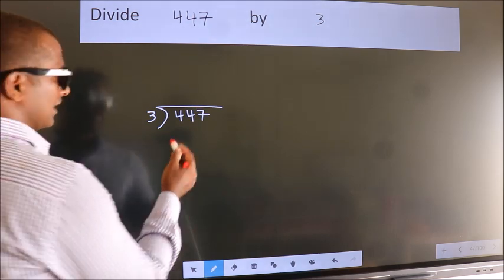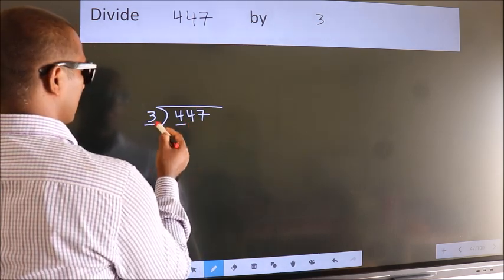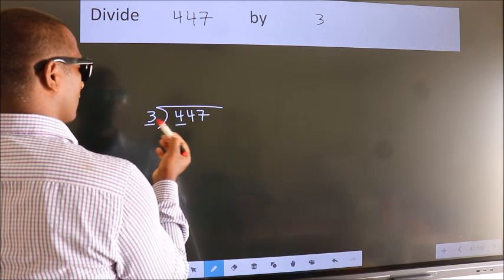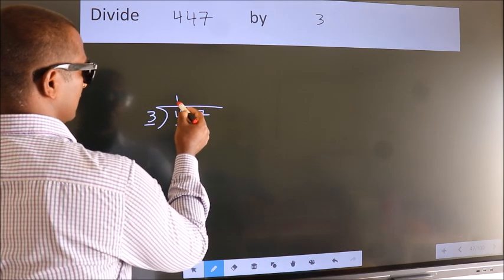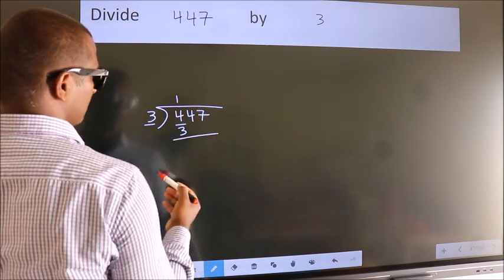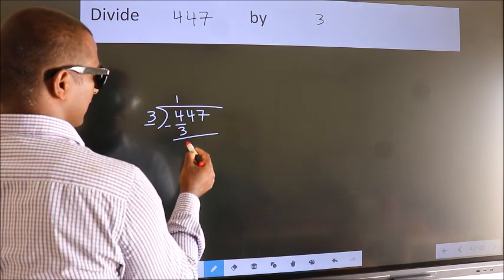Next, here we have 4, here 3. A number close to 4 in 3 table is 3 ones 3. Now, we should subtract. We get 1.